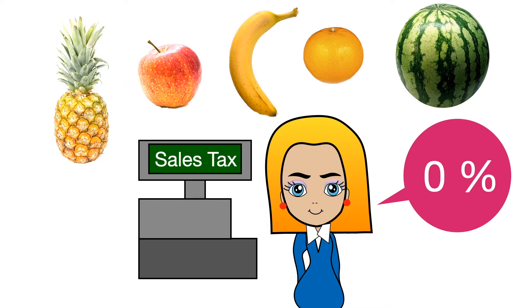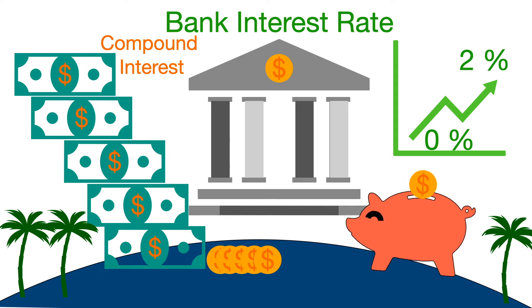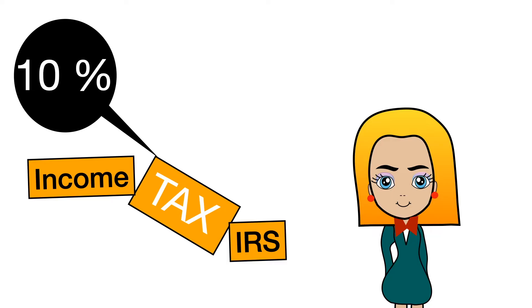When I go to a bank, I use percentages to find the interest rate in a savings account. The interest rate varies from 0% to 2% now. I see my money grow thanks to compound interest.